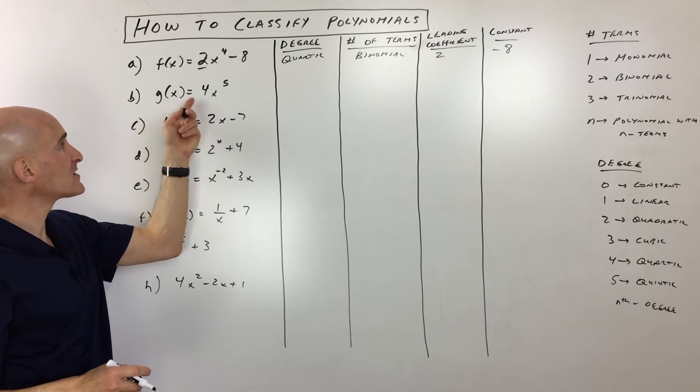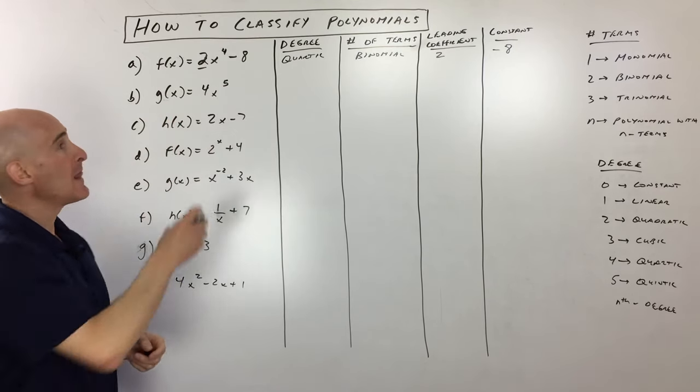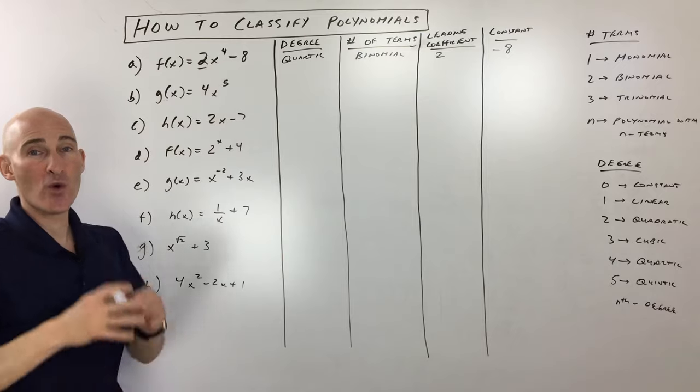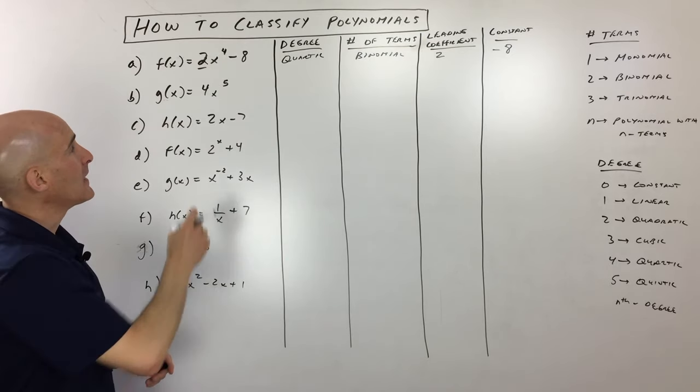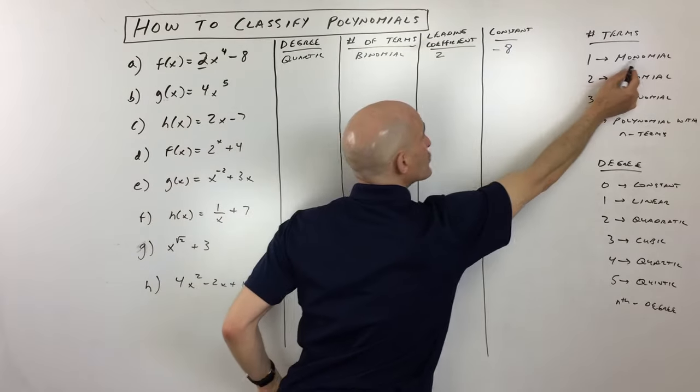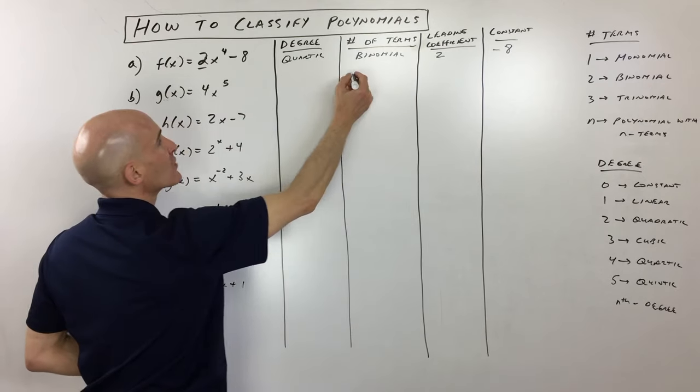Now the second one, g(x) equals 4x to the fifth. You can see this is just one group here, one term. So this is called a monomial. One term, mono, monomial. So we're going to write monomial.